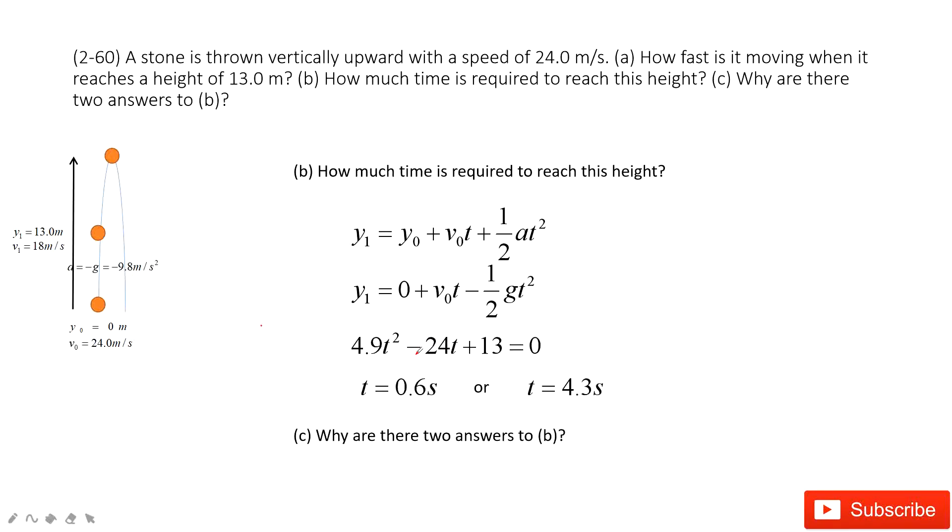It has two numbers: 0.6 seconds and 4.3 seconds. Why are there two answers? This is question 3. At this point, y1 can be 13 meters twice. The stone moves up to y1, then to the peak, and returns through y1 to the ground. At y1 it must have two times, two situations: one is moving up, another one is moving down. Thank you.